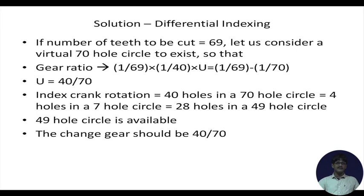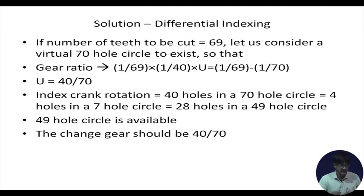Why do we assume a virtual hole circle? Because in that case the gear ratio becomes very simple. If you do not have something, how can you proceed with the calculations? Many times the fractions appearing in the calculations can be realized by other gear boxes or other hole circles as well. Let us frame the method and see whether it gives acceptable answers. So, how do we calculate the gear ratio?